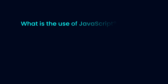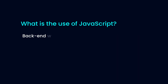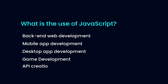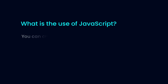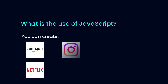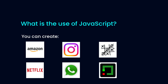What is the use of JavaScript? Uses of JavaScript is not only limited to front-end web development. It is also used in back-end web development, mobile app development, desktop app development, game development, and API creation. Using JavaScript, you can easily create websites like Amazon and Netflix, mobile apps like Instagram and WhatsApp, and games like Tic-Tac-Toe and Snake Game.